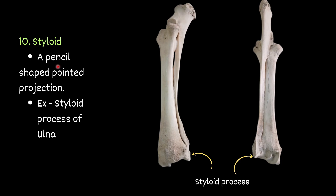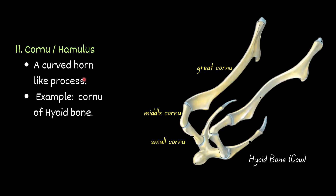Styloid process — a pencil-shaped pointed projection. For example, the styloid process of the ulna. You can see this is the ulna bone, and you will find a pencil-shaped pointed projection — this is called the styloid process. Cornu or hamulus — a curved horn-like process. Example: cornu of the hyoid bone.